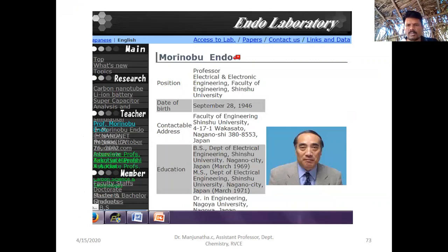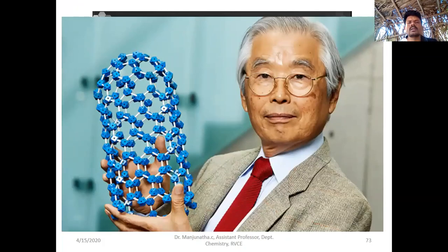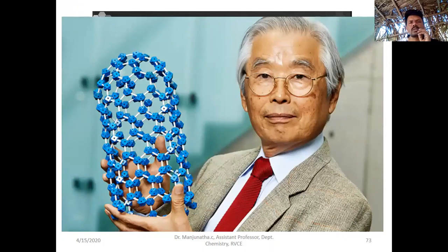He was the one who prepared carbon nanotubes for the first time, and later Sumio Iijima invented two types of carbon nanotubes: single-walled carbon nanotubes and multi-walled carbon nanotubes.